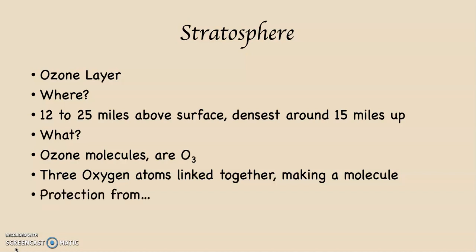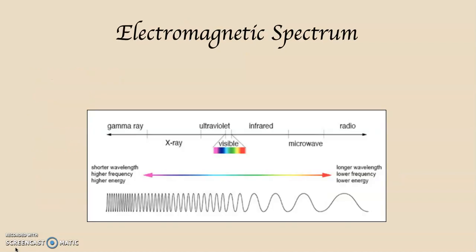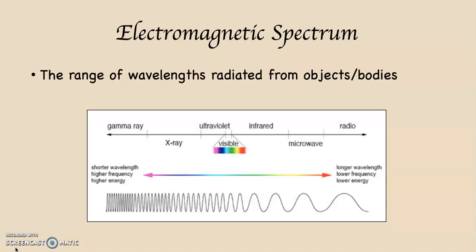If it's protecting us from something, we must be able to describe what that protection is from. Here's what it is. There's something called the electromagnetic spectrum. The electromagnetic spectrum is the range of wavelengths radiated from objects or from bodies. As I mentioned before, we are only concerning ourselves with two things: the Sun, which produces shortwave radiation, and the Earth, which produces longwave radiation.